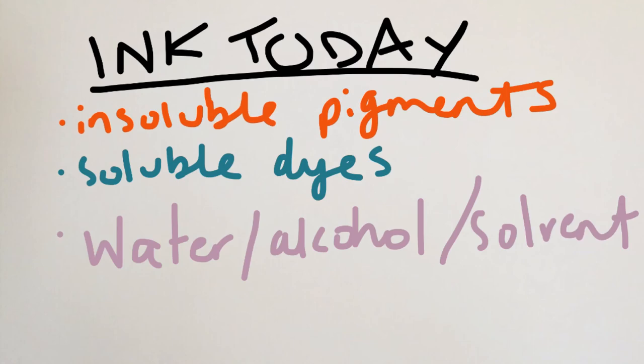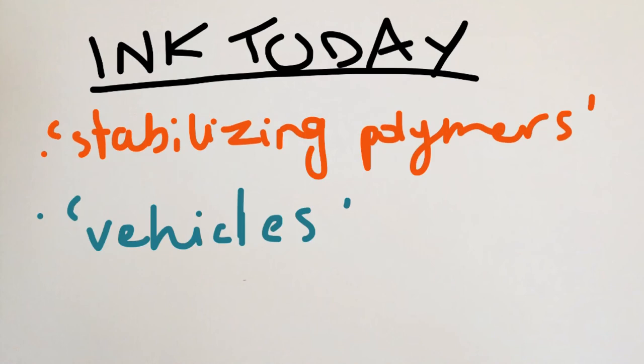Ink today is generally composed of insoluble pigments and soluble dyes mixed with water, alcohol, or other solvents. It also consists of stabilizing polymers so as to prevent the ink from clotting and allowing a smoother flow.